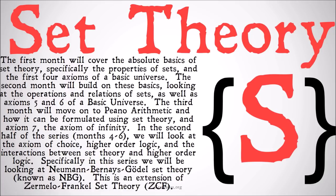The second month is going to build on these basics, looking at the operations and relations of sets, as well as axioms five and six of a basic universe. Those first two months are the solid grounding in what we're talking about when we talk about set theory. The third month is going to move on to Peano arithmetic. We've done a previous video on that, but this is going to space it out and make it more digestible for people that had trouble with that video. It's going to put it in the context of set theory — how Peano arithmetic doesn't necessarily need to be formulated in terms of numbers, but can be formulated in terms of set theory — as well as axiom seven, the axiom of infinity.